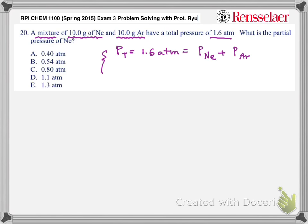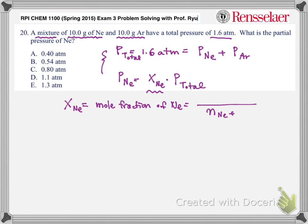And one other relationship known for partial pressure, the question is partial pressure of neon, is mole fraction of the neon multiplied by total pressure. So the question now comes down to X_Ne, which is mole fraction of neon, which means number of moles of neon divided by total number of moles, which is number of moles of neon plus number of moles of argon.